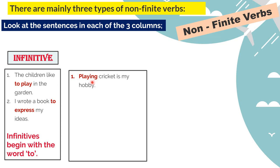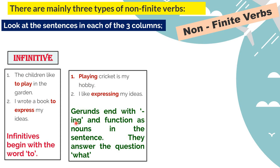The second type of non-finite verb is the gerund. 'Playing cricket is my hobby' - what is my hobby? Playing cricket. 'I like expressing my ideas' - I like what? Expressing my ideas. These '-ing' words look like verbs but function as nouns, answering the question 'what?' Gerunds end with '-ing' compulsorily and function as nouns in the sentence. They answer the question 'what?' - they are called gerunds.